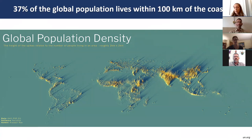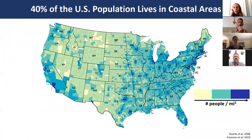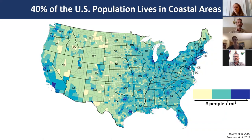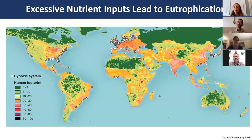Zooming in to the U.S., about 40% of the population lives along coastal areas, shown on a county-level population density map with dark blue colors indicating higher densities concentrated along coastlines. One of the biggest effects of this concentration is eutrophication, caused by excessive nutrient inputs.